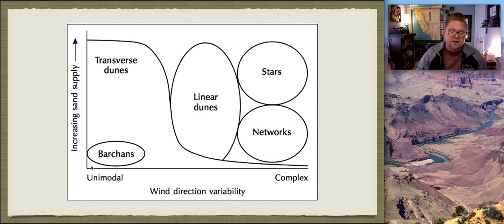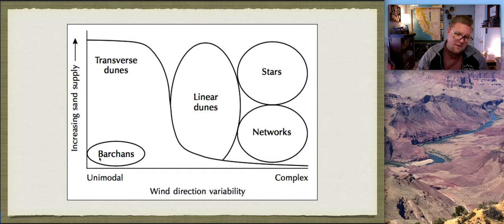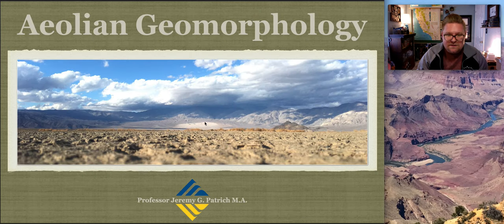The first dune type is the barchan - your most classic crescent-shaped dune. If you add more sand you get transverse dunes. If you change wind variability, barchan dunes turn into linear dunes. Adding more sand with variable wind gives you larger linear dunes. With limited sand supply but complex wind patterns you might get a mix. Add abundant sand with complex winds and you get star dunes - which is what's up in Panamint Valley with wind coming from all different directions merging into the middle.